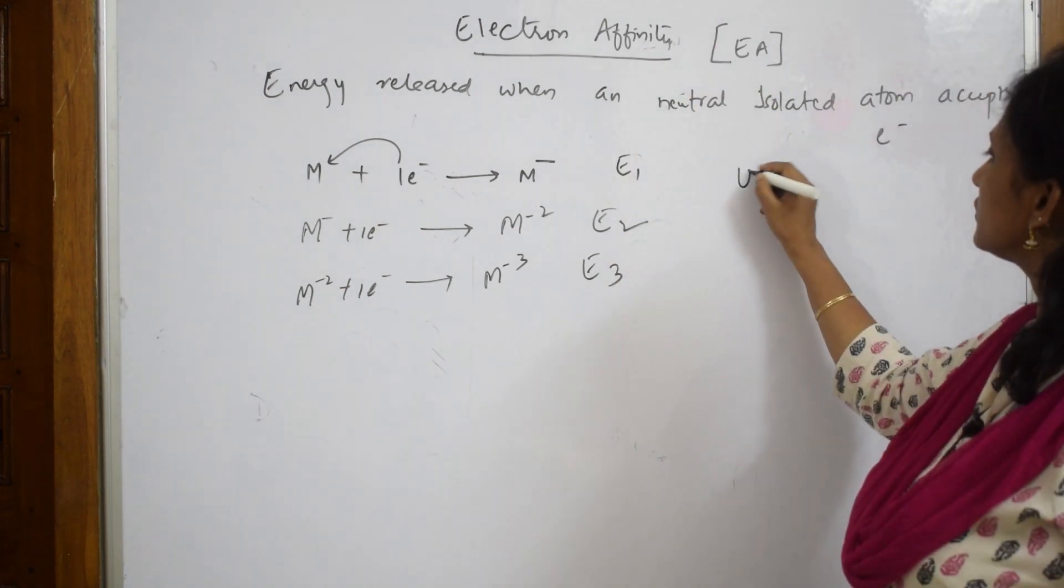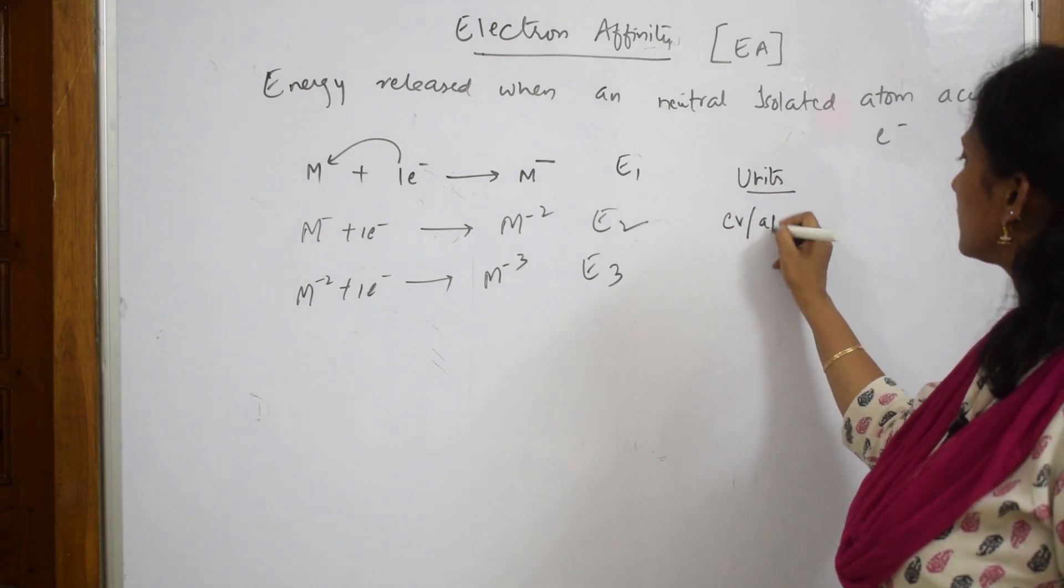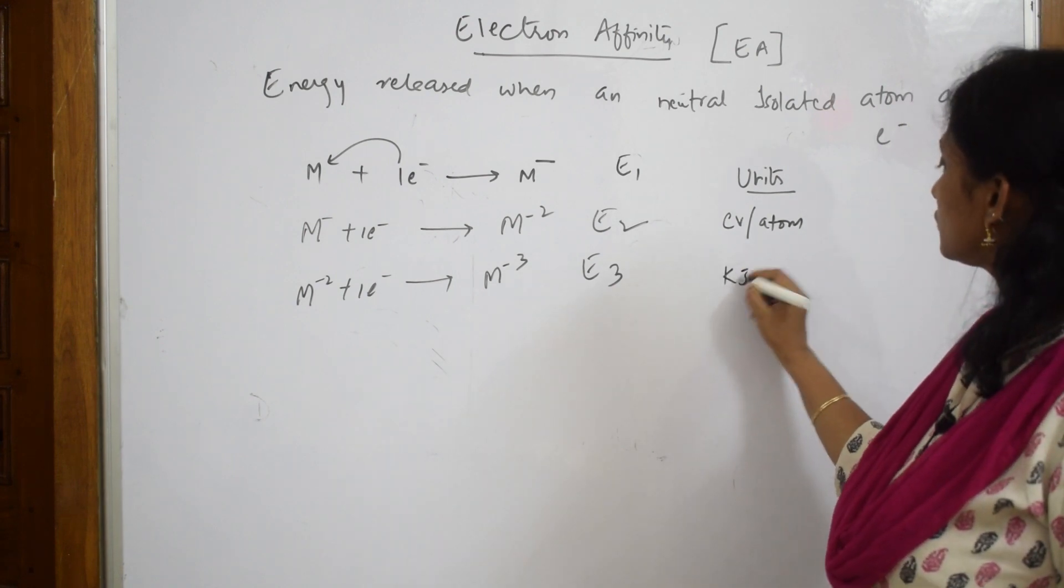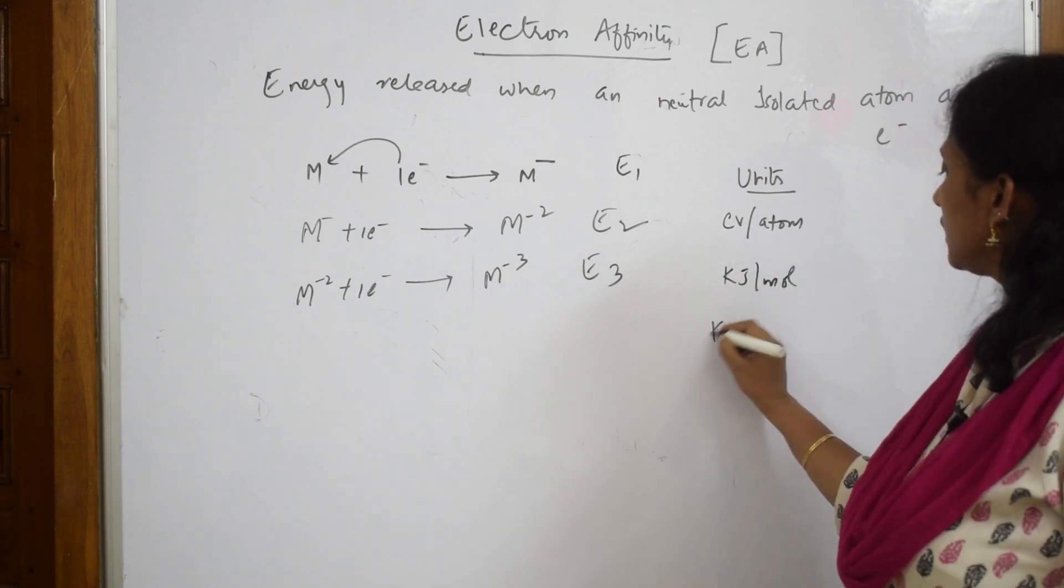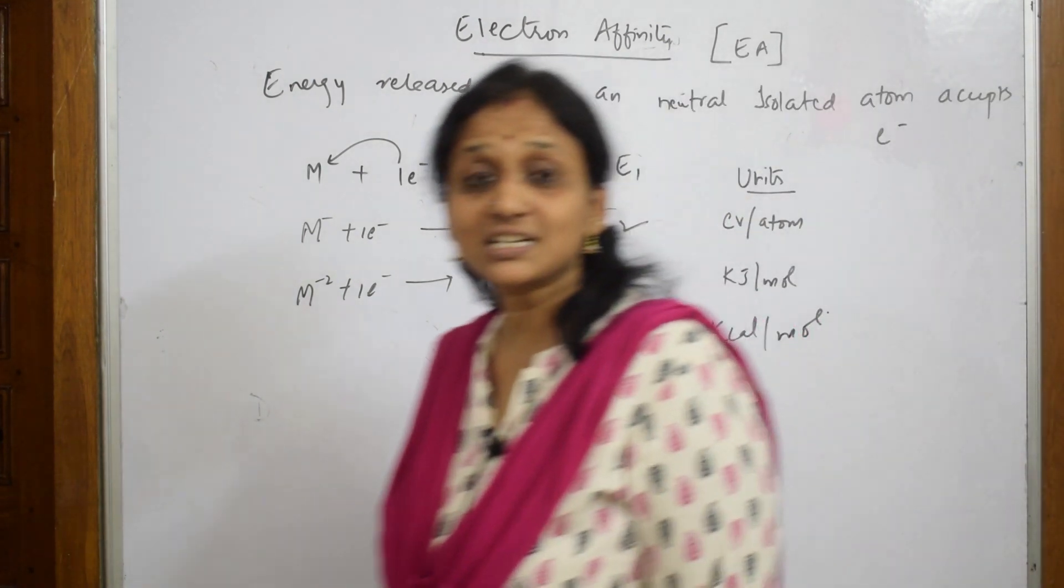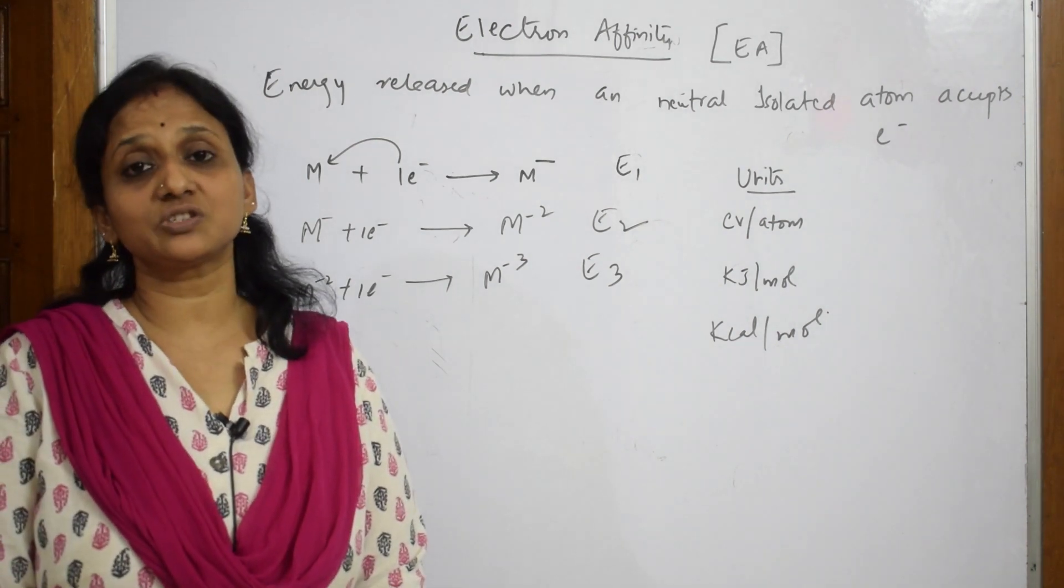What are the units for measuring them? I can measure electron affinity by electron volt per atom, same like ionization enthalpy. It can be kilo joules per mole or kilo calories per mole also. Now let's start solving different reasoning questions based on electron affinity.